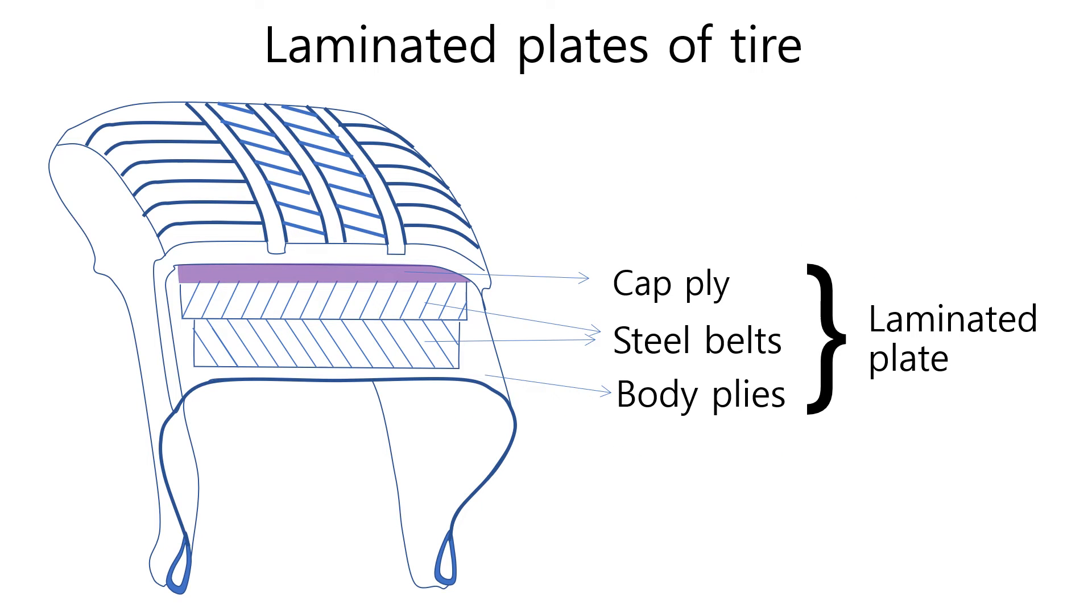Radial tire has a laminated plate structure of cap ply, steel belts, body plies, and so on, as shown in the picture. Among them, steel belts have the highest stiffness. Therefore, steel belts are main elements to be focused on in the Ply Steer study.